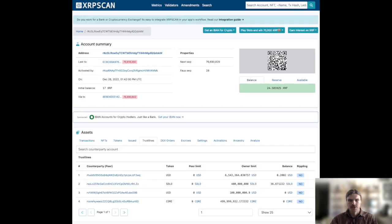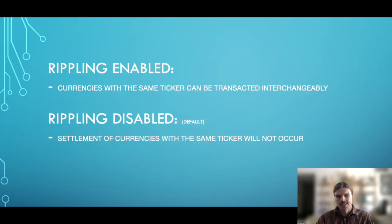For non-issuing accounts such as my personal XRP ledger wallet, enabling rippling can be undesirable because it lets other users shift obligations between tokens with the same currency code but different issuers. For instance, I'd prefer to keep rippling on its default setting which is disabled, because if one day I unknowingly add a fake token with the same ticker as one of my real assets, I wouldn't want to risk having the real tokens from the trusted issuer replaced with fake tokens from a potentially fraudulent issuer.